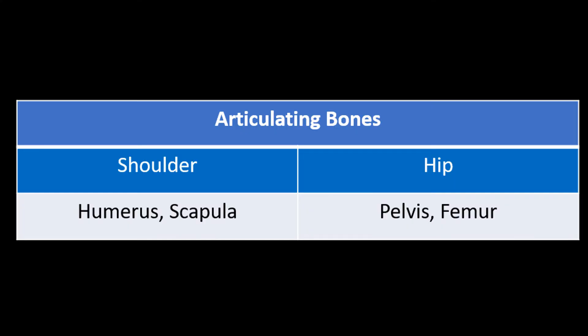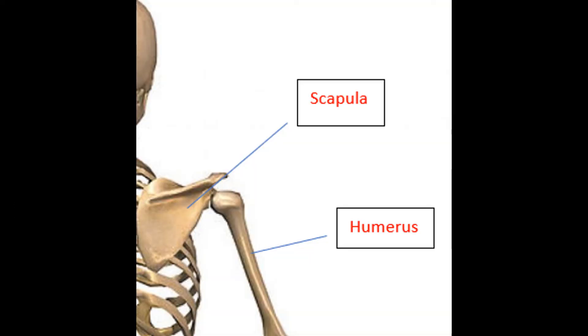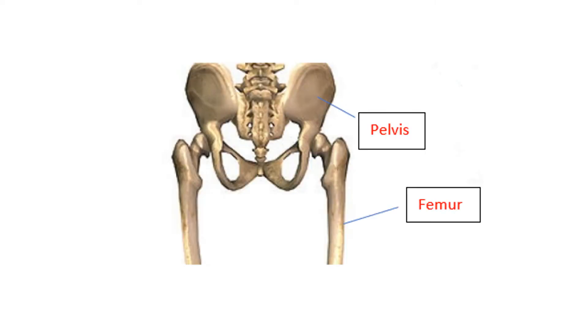Again, we need to know the articulating bones that make up the ball and socket joints. The shoulder joint is where the humerus and scapula meet, whereas the articulating bones at the hip are the pelvis and the femur.